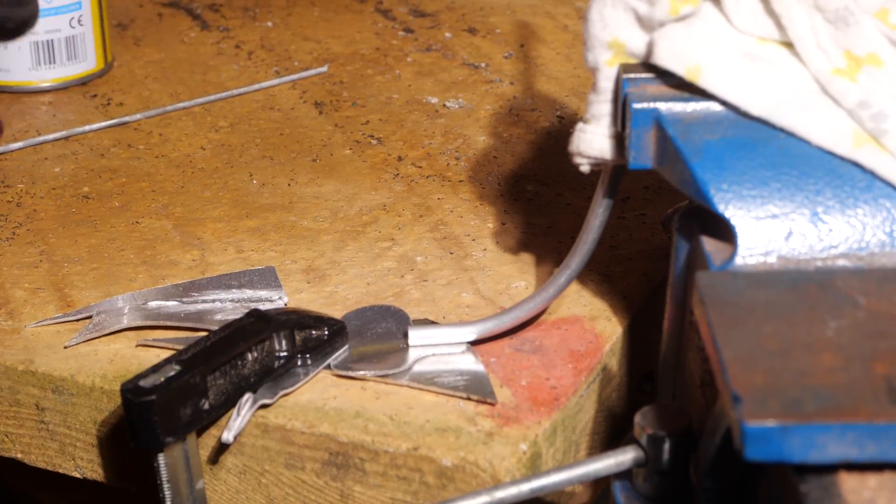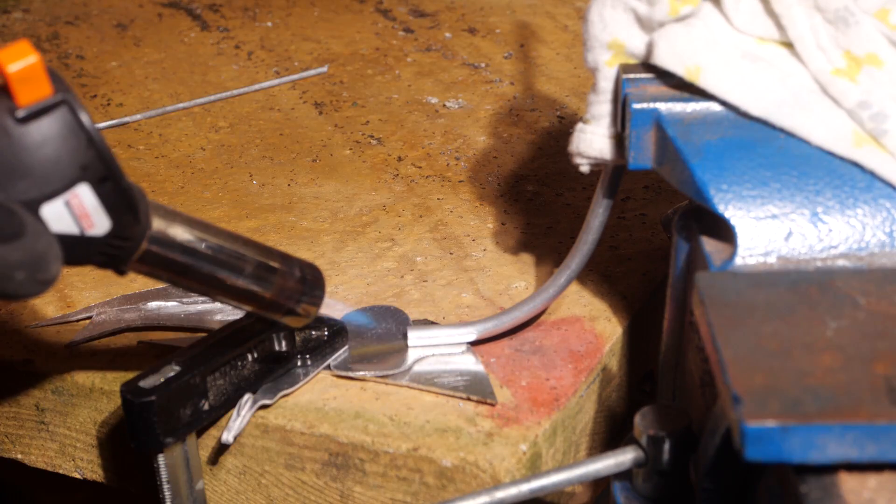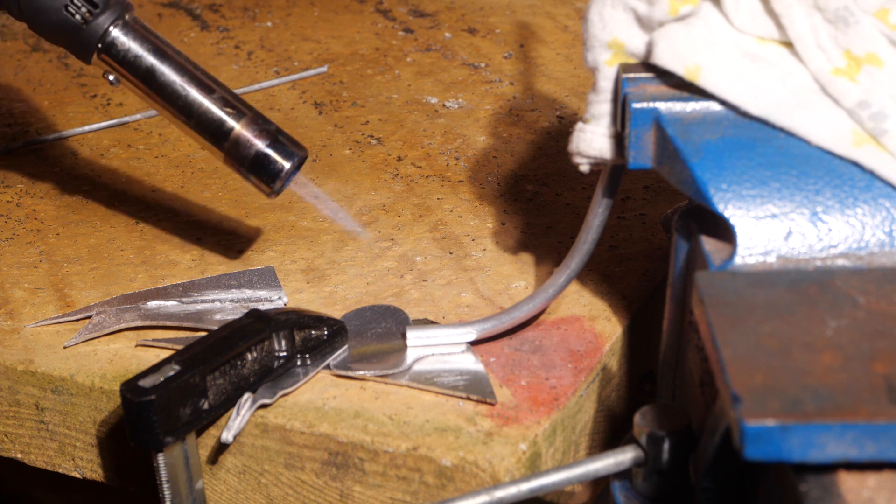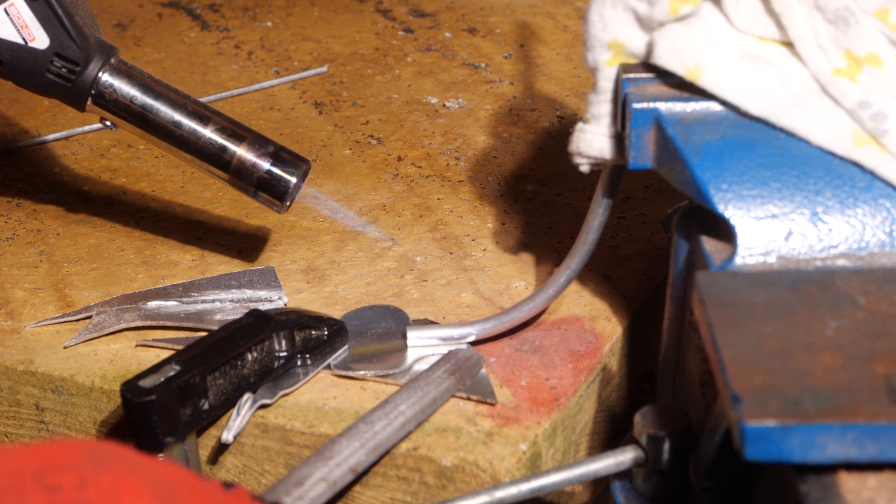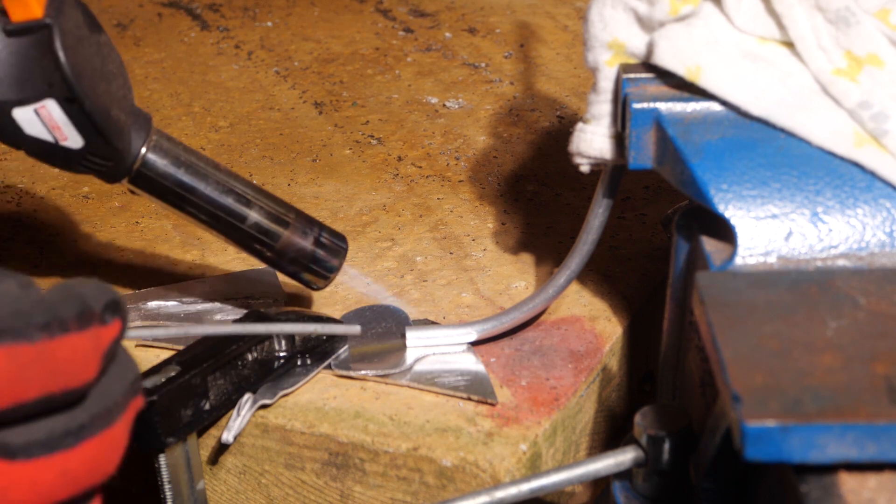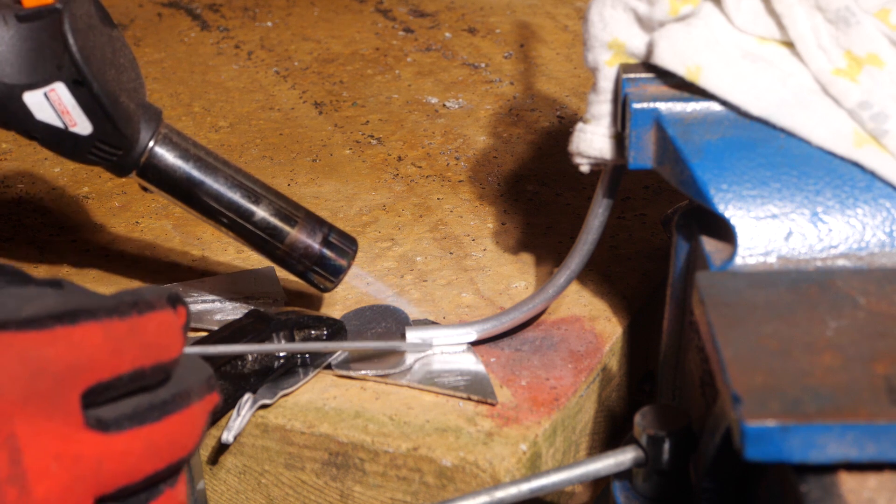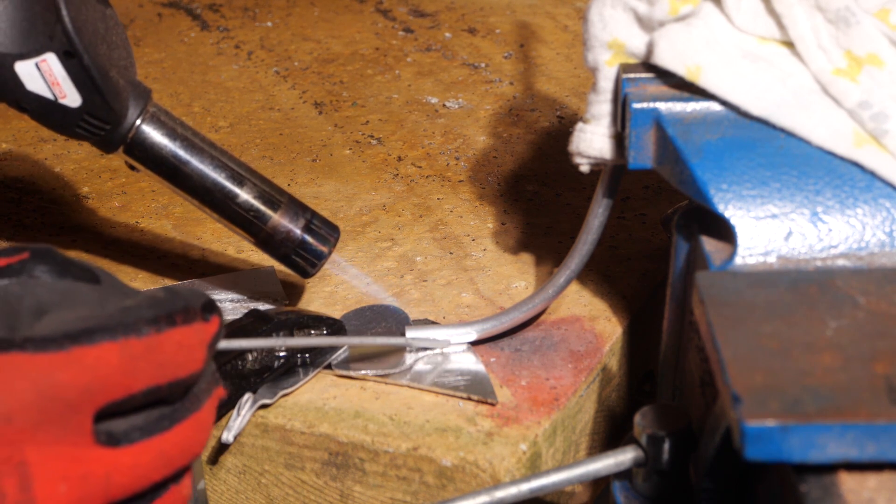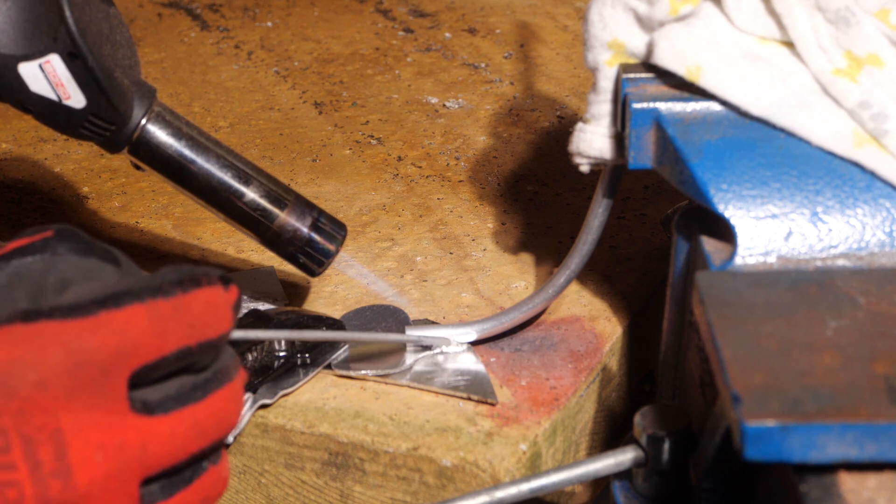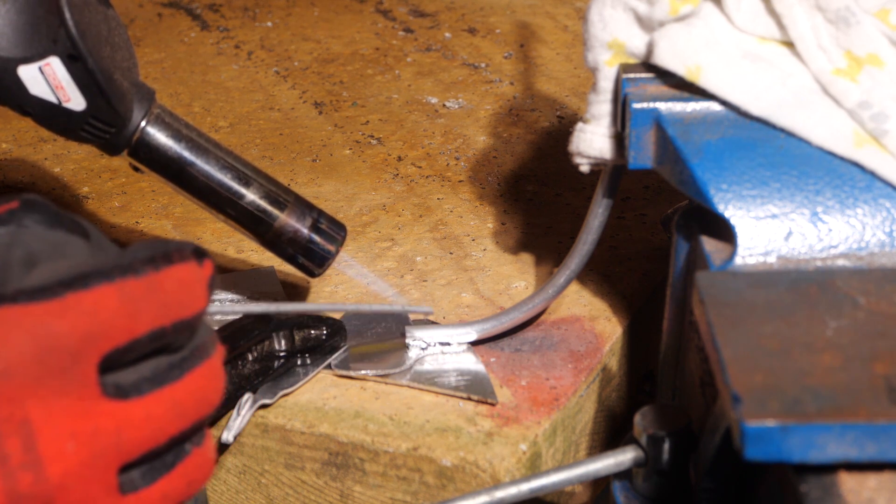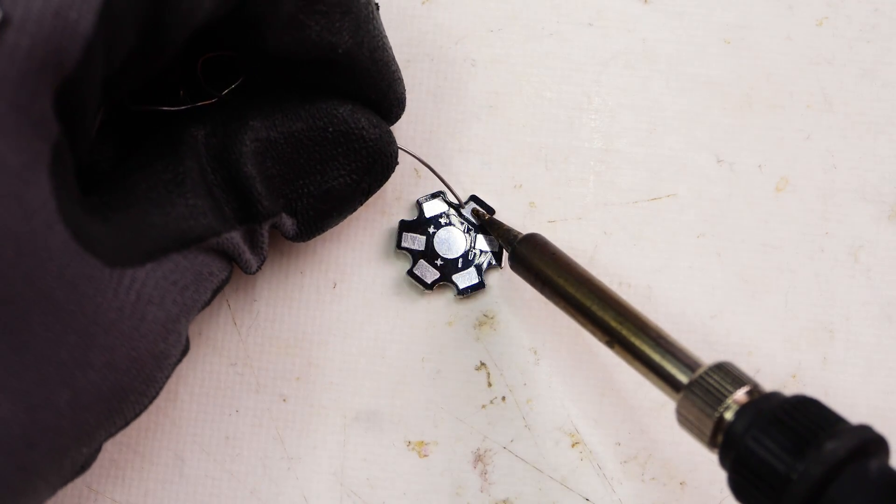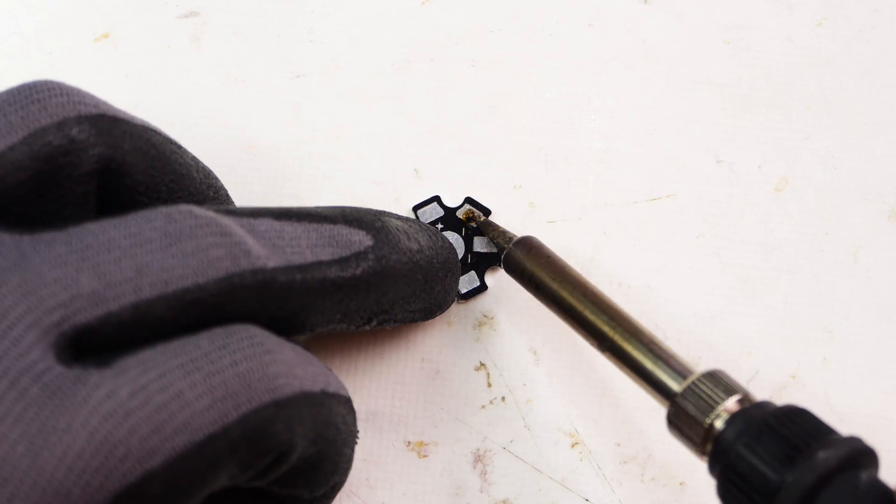I have bent a small plate using the same method. Both the plate and tube being aluminum, they can be joined together using aluminum brazing rods. I have also bent the little heatsinks which are required, as I will be using 3W LEDs.